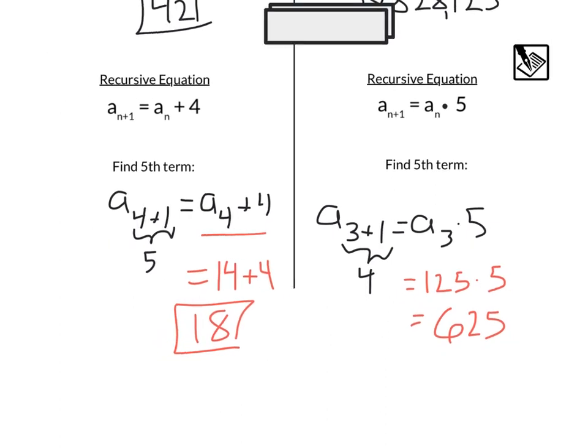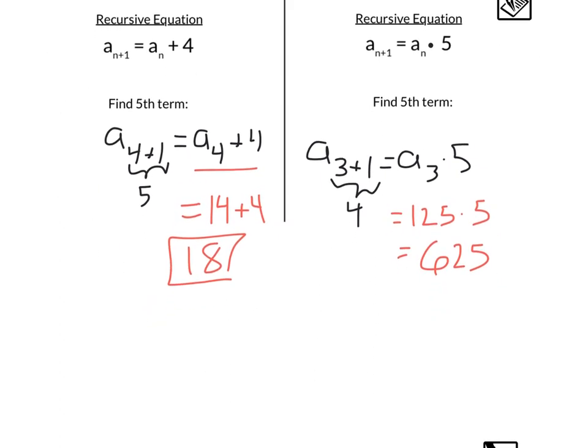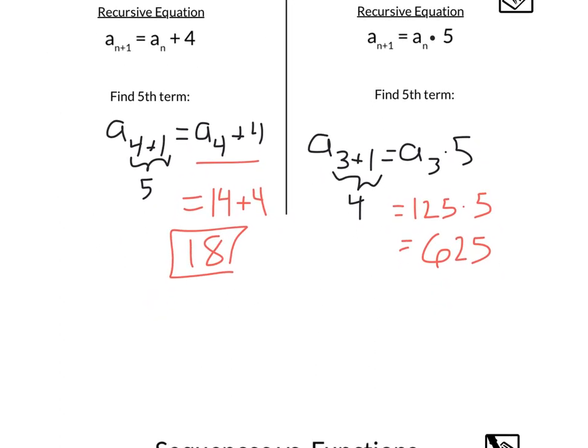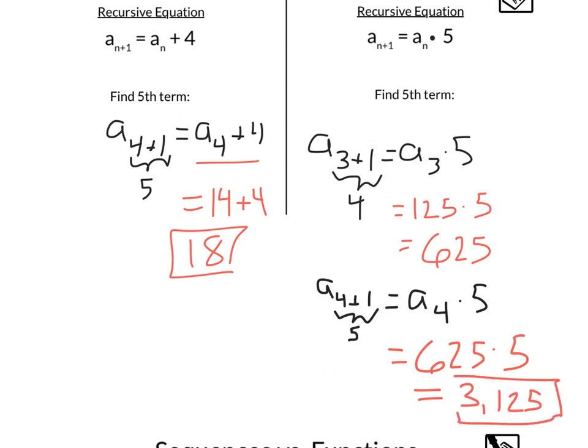Now that we've got our fourth term, we'll be able to find our fifth term. That would be a(4+1) is the fifth term, and that's going to equal the fourth term times 5. We just found our fourth term, which is 625 times 5, giving us finally a fifth term of 3,125.